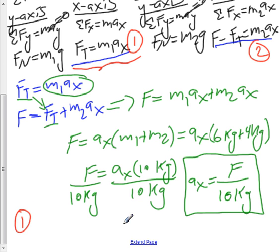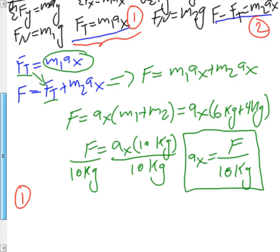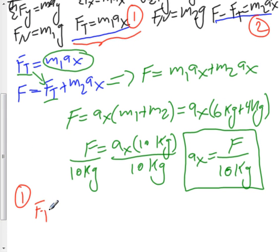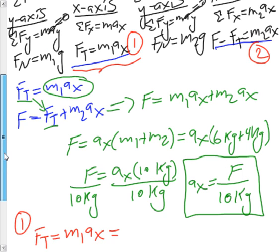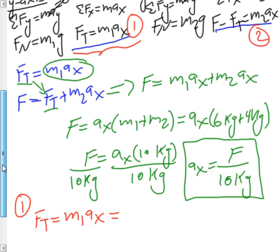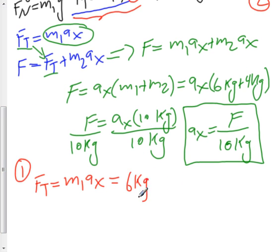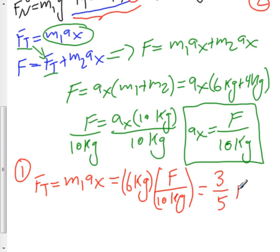We're going to rewrite down the equation that we know: force of tension is equal to m1 times ax. Now we're just going to simply plug in the values. m1, we remember again, we denoted to be the six kilogram mass, so m1 we plug in six kilograms. And we showed before that ax is equal to the applied force F over 10 kilograms. If we now carry out this multiplication, we would see that the force of tension is three-fifths of the applied force. So Ft is equal to three-fifths of our applied force, three-fifths of F.